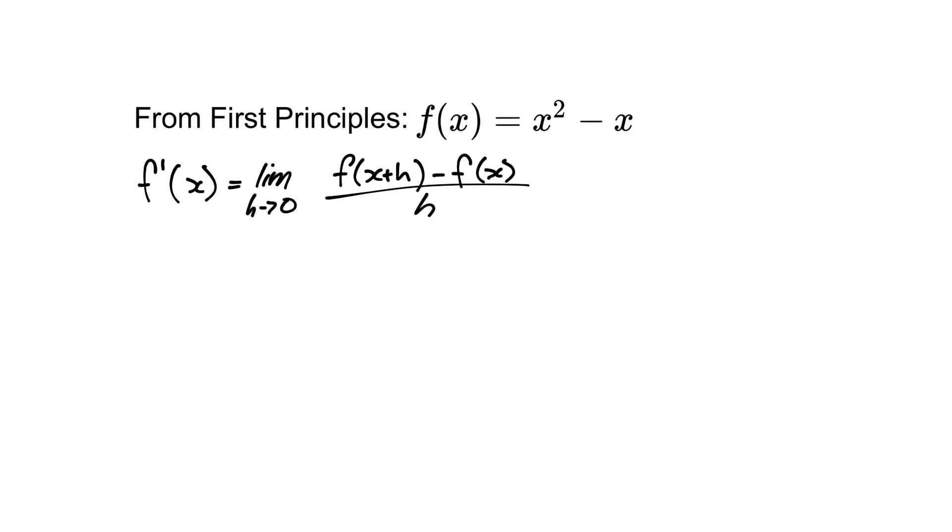Plugging it into our function, so we get the limit as h tends towards 0 of f of x in this case is x squared minus x. So we go x plus h squared minus x plus h. Then we have minus, let's put this all in a bracket, of x squared minus x all over h.